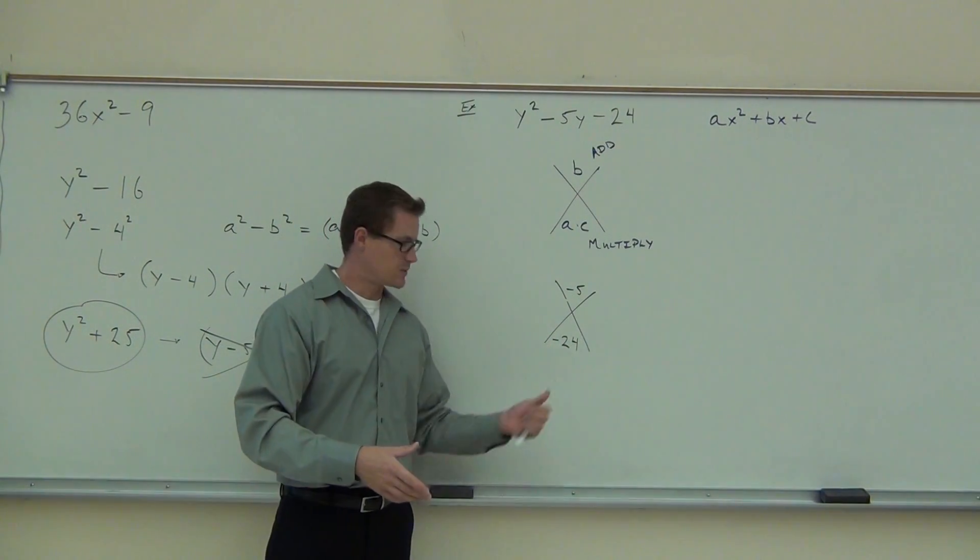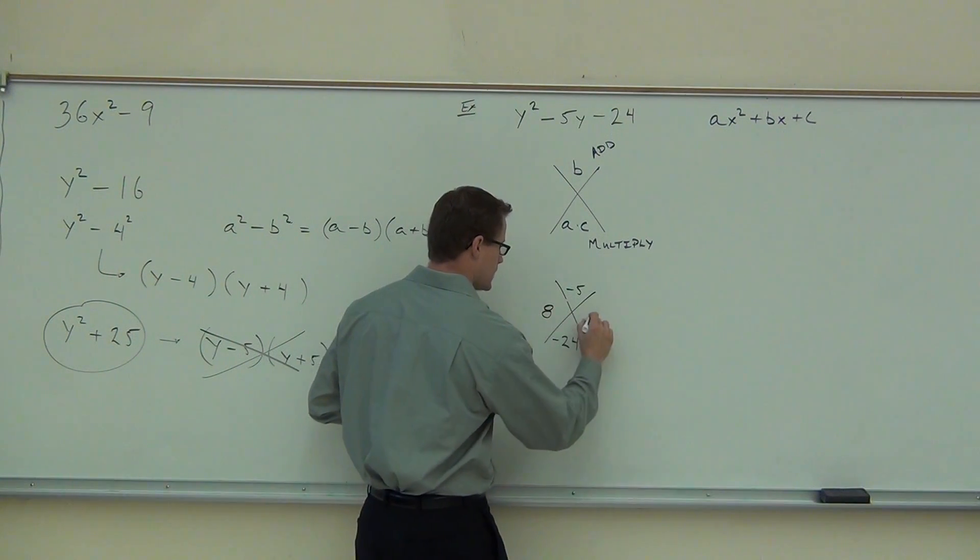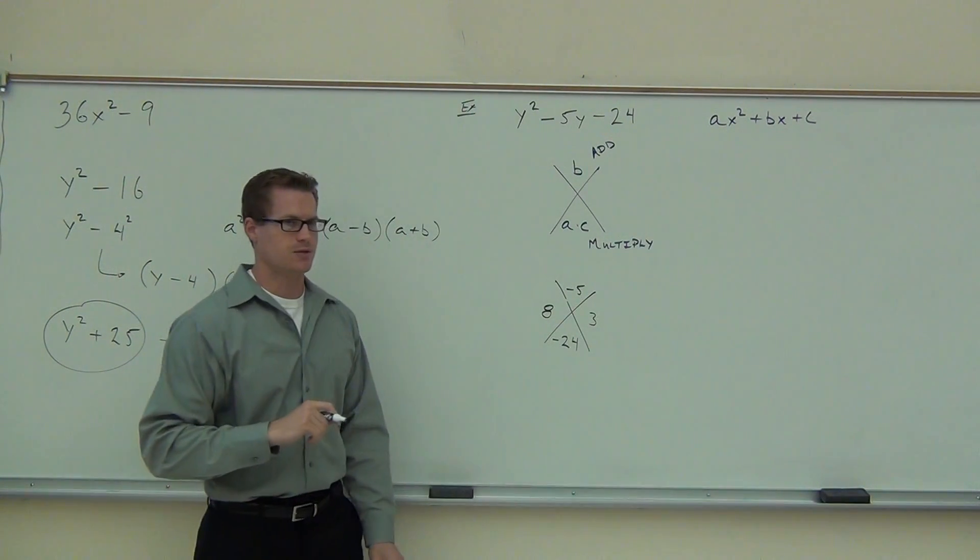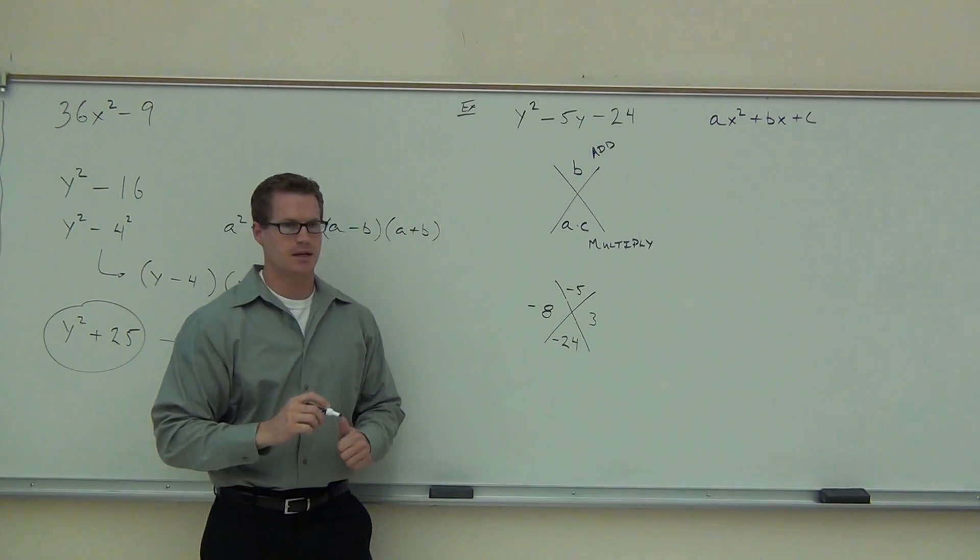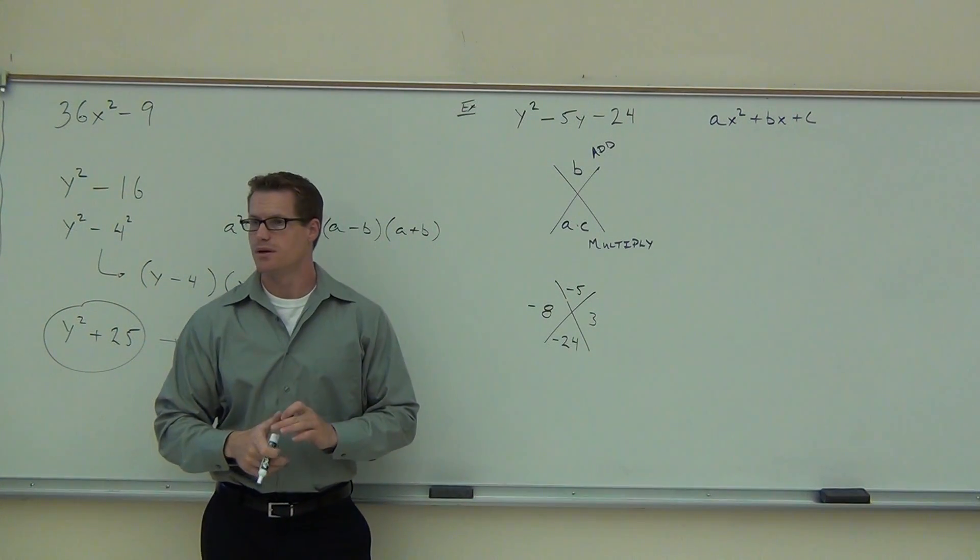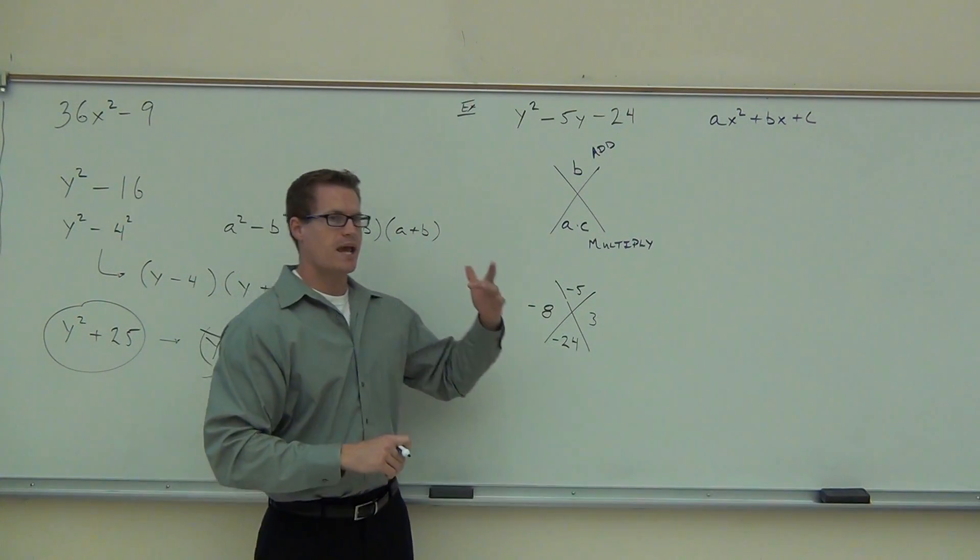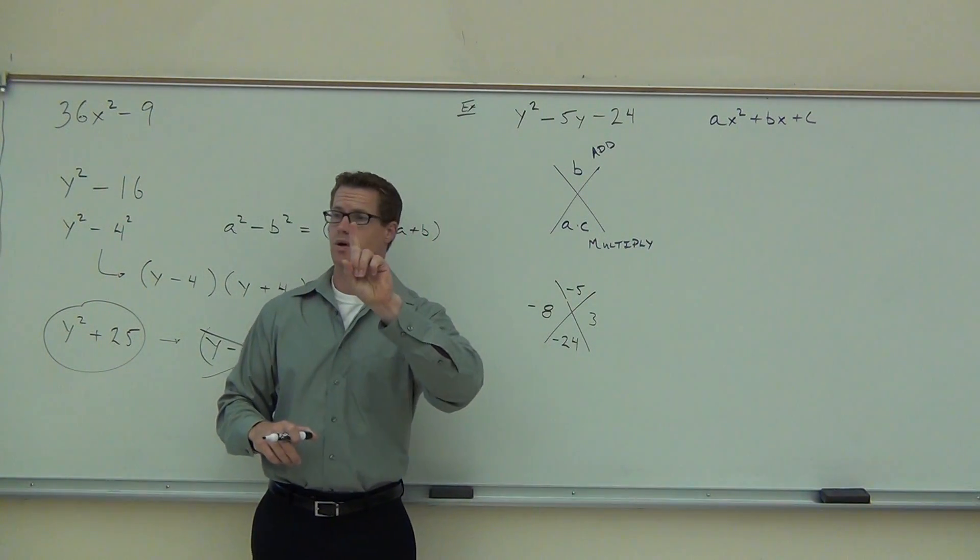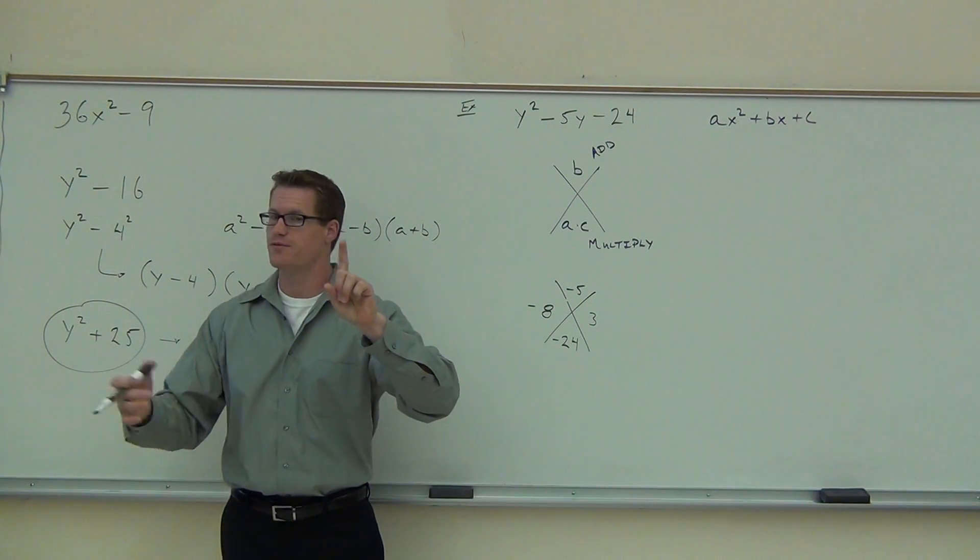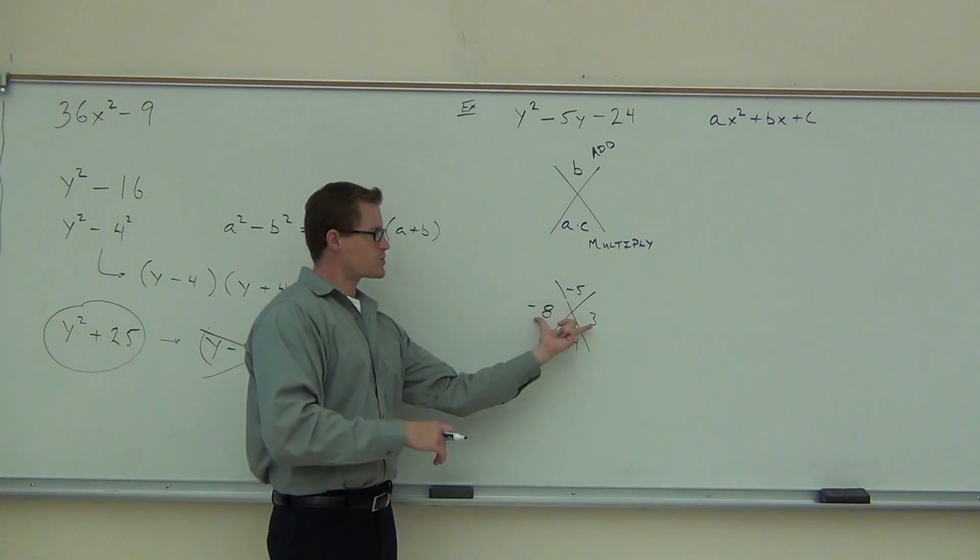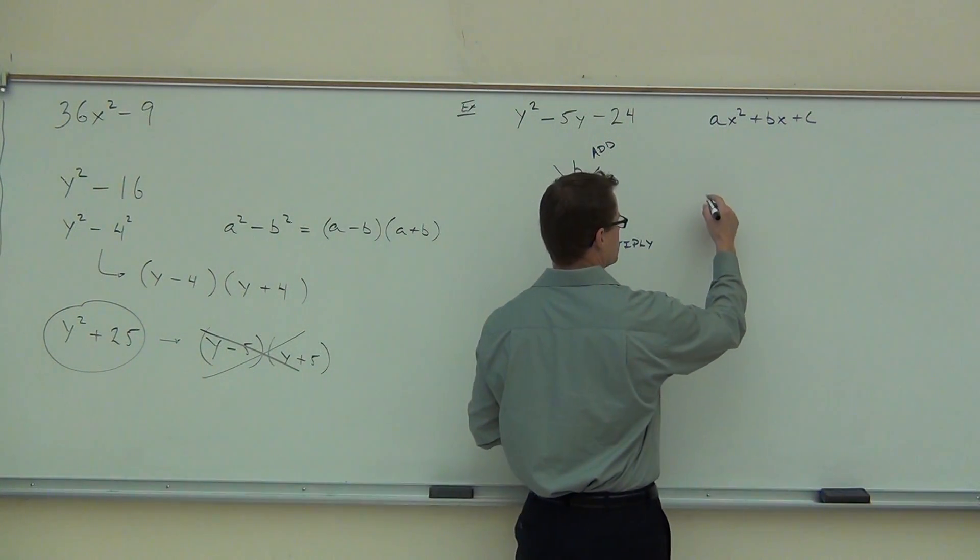8 and 3. One of them's got to be negative. One of them's got to be positive because of that. So we're going to write down 8 and 3. Which one has to be negative here? 8. Yeah, because we're adding and getting the negative there. Are you still with me on this? Now, here's what's kind of nice about it. When your A is 1, when your A is 1, you're pretty much done with this process. This is awesome. You've already factored this.